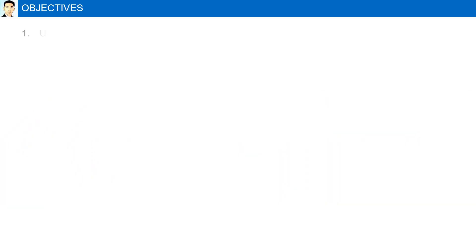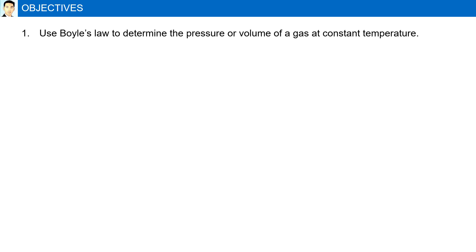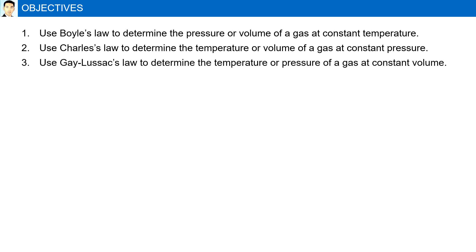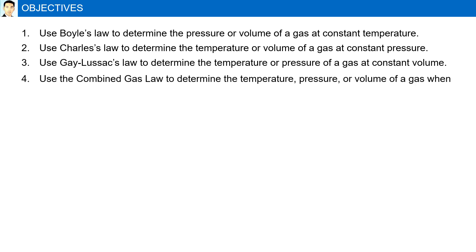Gas Laws objectives: Use Boyle's law to determine a pressure or volume of a gas at constant temperature. Use Charles' law to determine a temperature or volume of a gas at constant pressure. Use Gay-Lussac's law to determine a temperature or pressure of a gas at constant volume. And finally, use the combined gas law to determine a temperature, pressure, or volume of a gas when it changes and two of these properties are given.